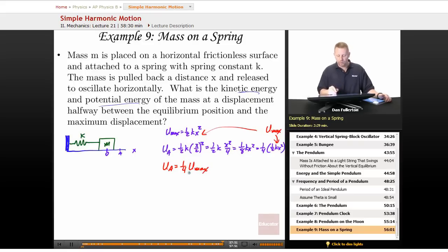So at A, it's got one-fourth of its maximum energy. Where's that other three-fourths of the energy? That's got to be kinetic energy at A. So that must be three-fourths of the maximum spring potential energy.